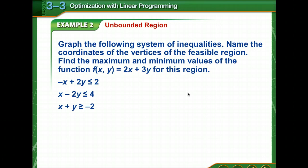Now, when a system of inequalities does not form a closed region, it's called unbounded. So that's what we're going to look at now. We'll begin by doing the same thing we did on the last example. We're going to graph each of our inequalities, and then we're going to evaluate into this function, each of our vertices.